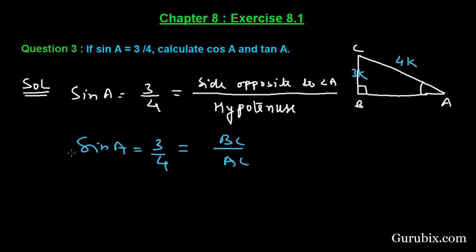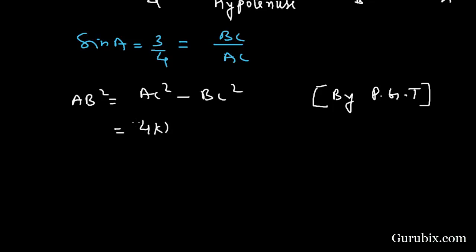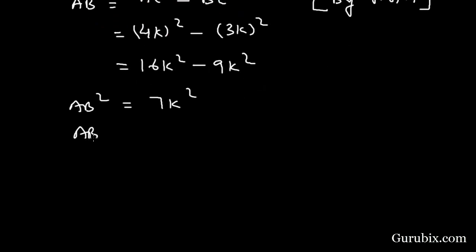Now we shall find AB squared. It will be equals to AC squared minus BC squared by Pythagoras theorem. AC is 4K, so 4K squared. Here we have 3K squared. This equals 16K squared minus 9K squared, which equals 7K squared. So AB squared is 7K squared. This means AB is equals to square root of 7K.